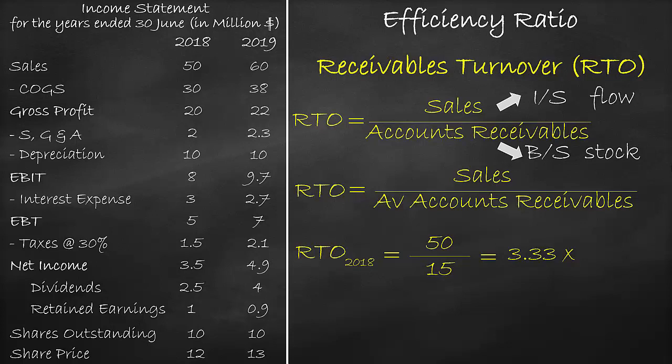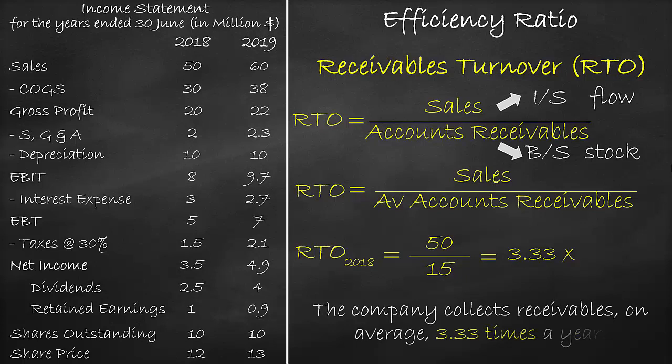The unit of the Receivables Turnover is times. It means that a company collects Receivables, on average, 3.33 times a year. The higher the Receivables Turnover, the better.